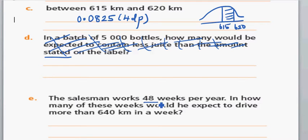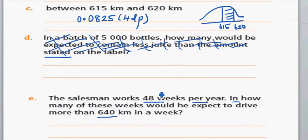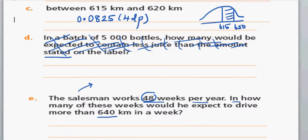The next question: the salesman works 48 weeks per year. In how many of these weeks would you expect him to drive more than 640 kilometers? We need to first find the probability of the salesman traveling more than 640 kilometers in any given week.